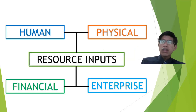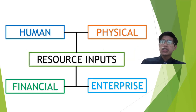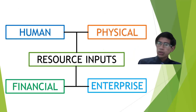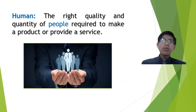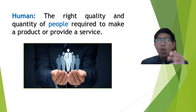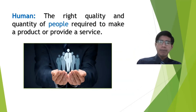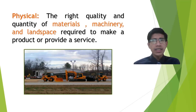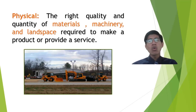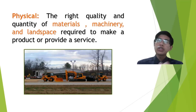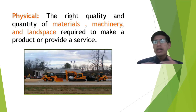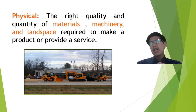In the resource inputs we have human, physical, financial, and enterprise. Number one — human: the right quality and quantity of people required to make a product or provide a service. Number two — physical: the right quality and quantity of materials, machinery, and landscape required to make a product or provide a service.